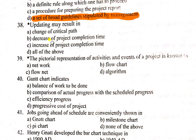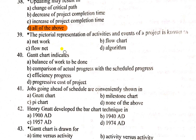Question number 38: Updating may result in change of critical path, decrease of proposed completion, increase, and all of the above — so all of the above is the correct answer. The pictorial representation of the activity and event of a project is known as a network diagram. A network diagram is a type of diagram in which the activities and events of a project are represented.